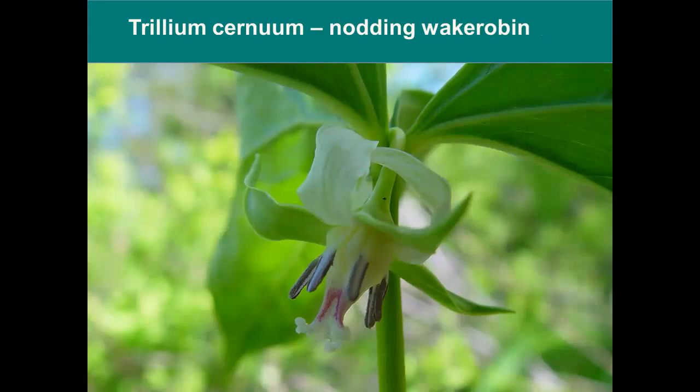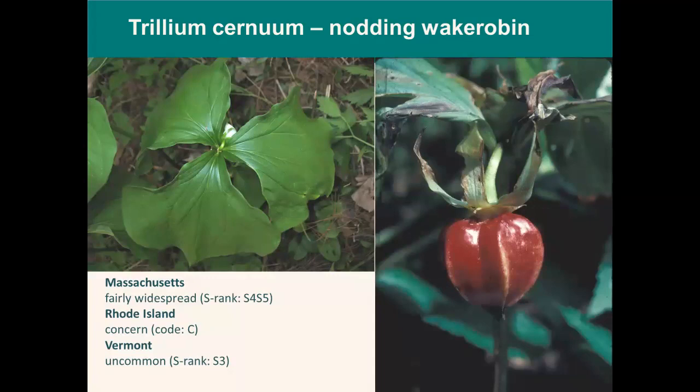The first is Trillium cernuum, or nodding wake robin. Many people are familiar with this one, as well as with erectum and a few others seen somewhat commonly in New England. This is a white-flowered Trillium called nodding Trillium because the flowers nod or hang downwards, as you can see in the top left photo, and they're often concealed by the whorl of three leaves. On the right you can see the dry berry-like capsule fruit produced at the end of the season. It is fairly widespread in Massachusetts at S4–S5, considered of concern in Rhode Island due to limited habitat, and uncommon at S3 in Vermont for much the same reason.